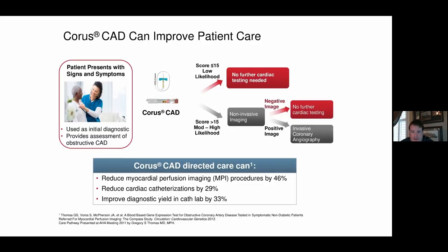A patient flow diagram shows the physician decision tree: if a patient has a low score of 15 or less, no further cardiac testing is generally needed; higher scores trigger additional diagnostic testing. Study results show Chorus CAD reduced MPI procedures by 46%, reduced actual cardiac catheterizations by 29%, and improved diagnostic yield — meaning patients with higher scores who reached the cath lab were far more likely to actually have a blockage than the general population.